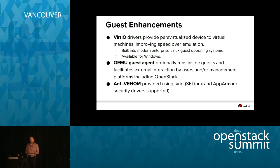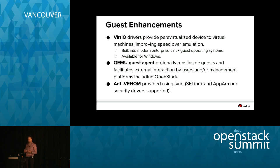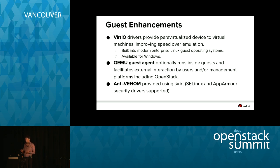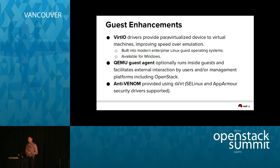The QEMU guest agent optionally runs inside guests and facilitates interaction either by users or management platforms, so they can run something inside the guest. We'll talk about an example of how that's used in the Kilo features. From a basic point of view it provides an API for doing things you need to get into the guest to do — extracting the IP address, or even initiating snapshots.